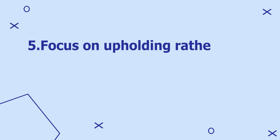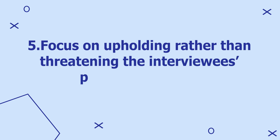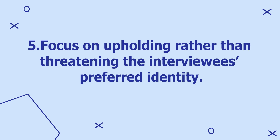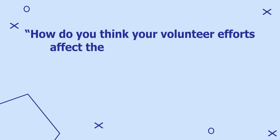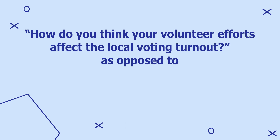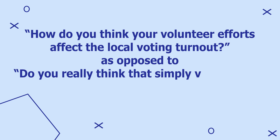Tip number five: focus on upholding rather than threatening the interviewee's preferred identity. For instance, if the research participant views herself as a social justice activist, it's better to ask "how do you think your volunteer efforts affect the local voting turnout," rather than asking "do you really think that simply volunteering impacts voting turnout?"